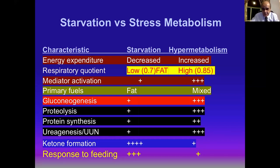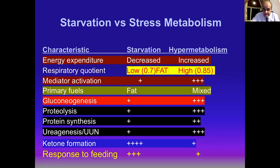In starvation, the patient depends mainly on muscle, so there is muscle wasting if we do not provide nutritional support. The respiratory quotient averages 0.617 in starvation, but in hypermetabolism or stress it is higher at 0.85. Mediator activation is highly activated in hypermetabolism. In starvation, the patient depends mostly on fat and ketones, whereas the hypermetabolic or stressed patient depends on mixed macronutrients. Glycogenesis, proteolysis, protein synthesis, gluconeogenesis, and urea formation are all increased dramatically in stress.